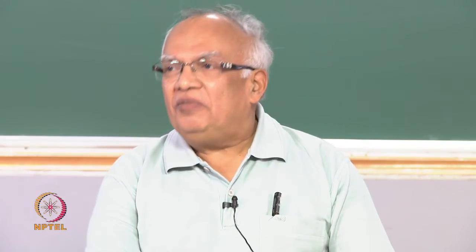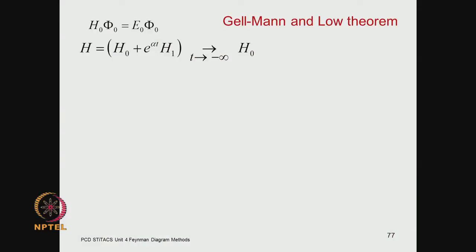Greetings. We did the Gell-Mann and Low theorem in our previous class and obtained a certain expression with reference to the adiabatic switching technique, which we introduced in the previous few classes. We will also examine how it corresponds to the Rayleigh-Schrödinger perturbation formalism. This is the Gell-Mann and Low theorem — just to remind you of a few things so we can quickly recapitulate.